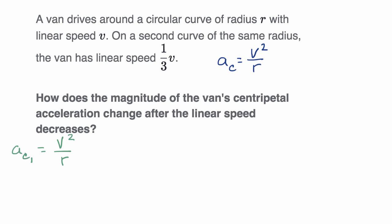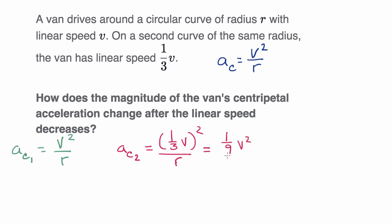Now what about the second curve? The magnitude of our centripetal acceleration around the second curve is going to be equal to — they tell us we now have a linear speed of 1/3 v. So in our numerator we're going to square that: (1/3 v) squared, all of that over the radius, which is still r. And 1/3 v times 1/3 v is just going to be 1/9 v squared, so it's going to be 1/9 v squared over r.